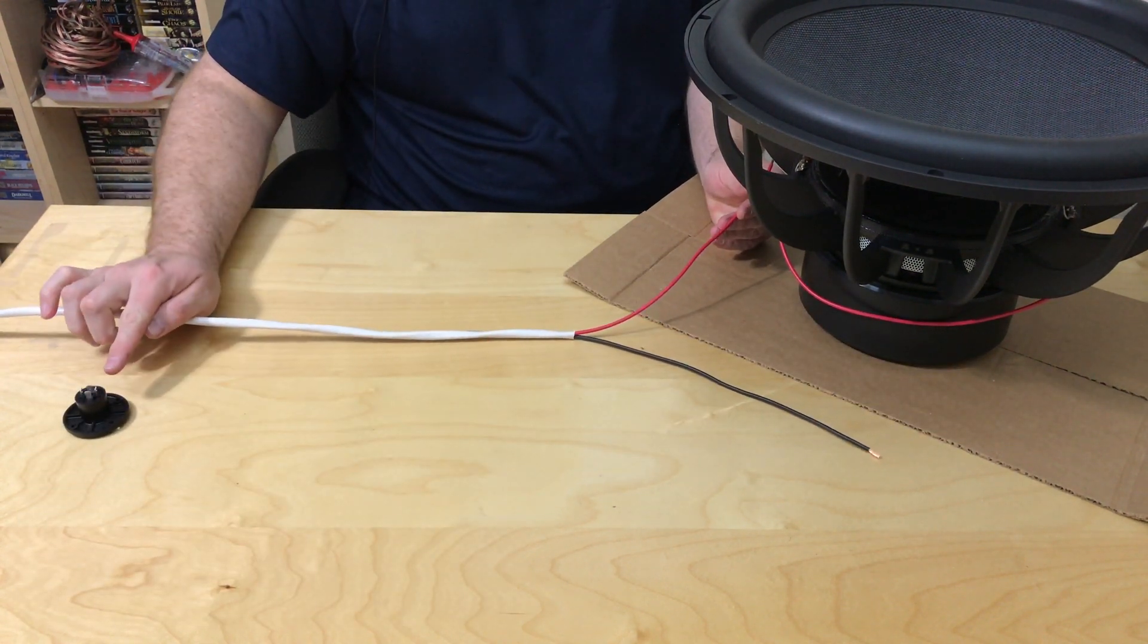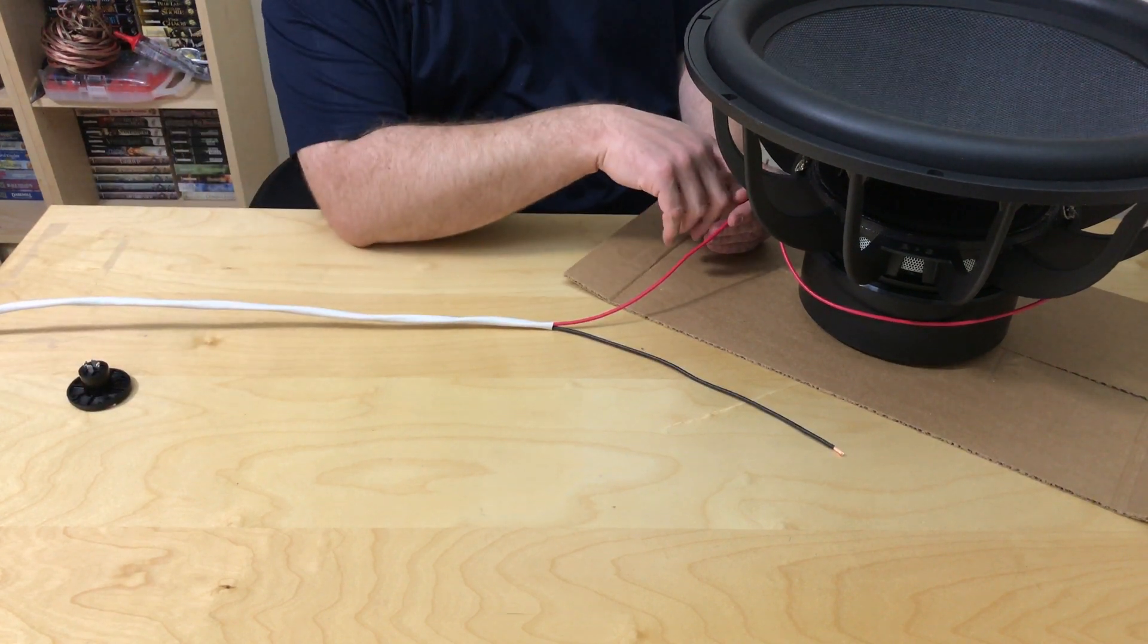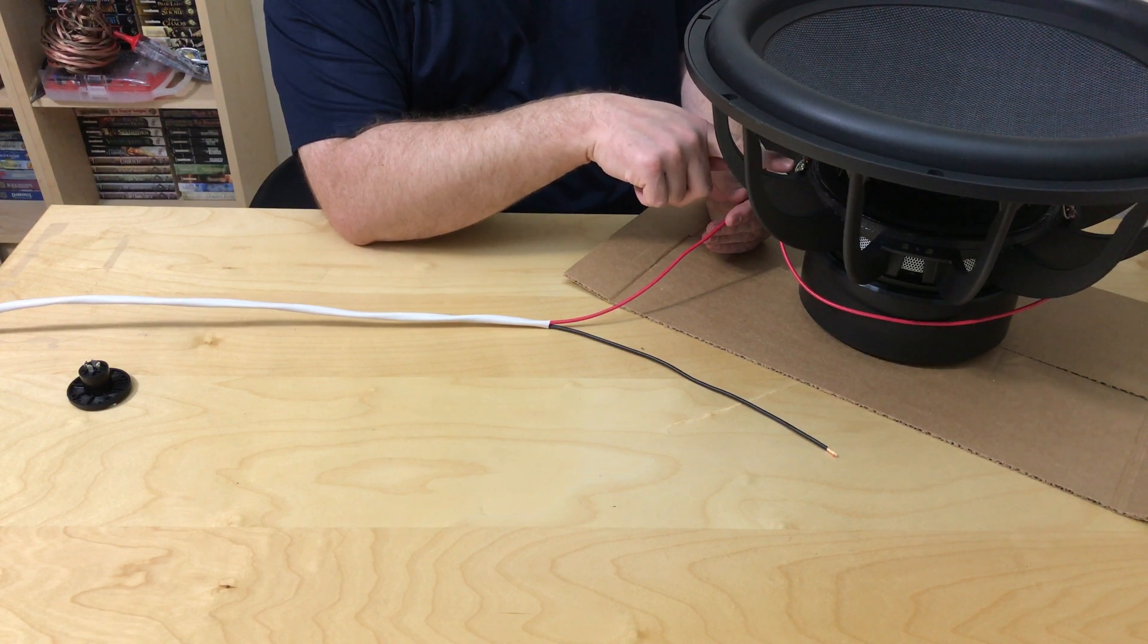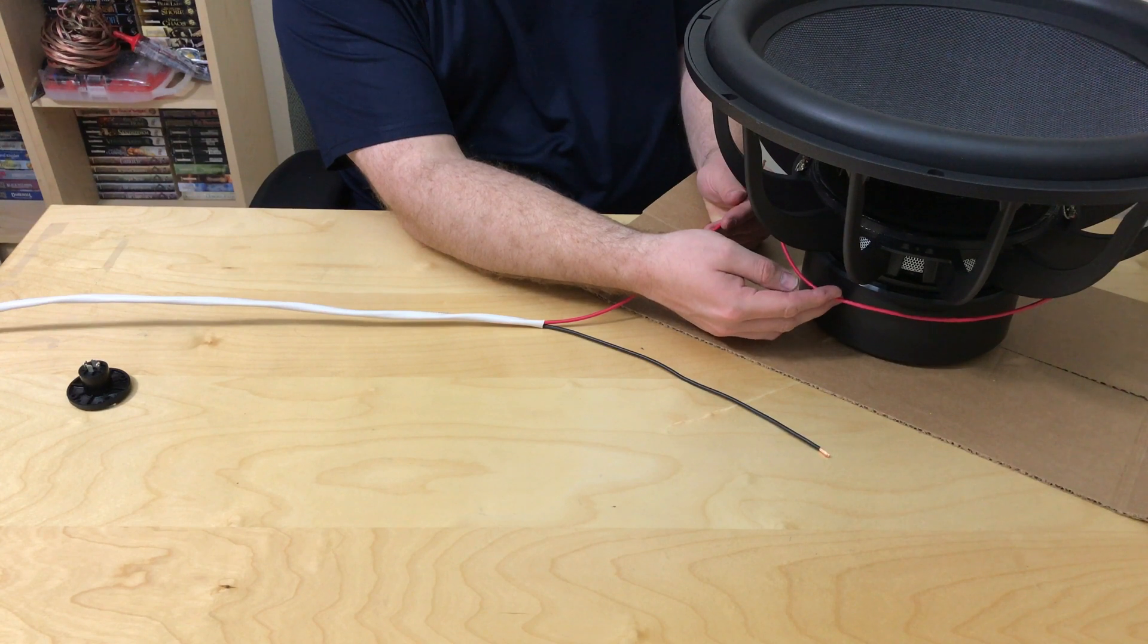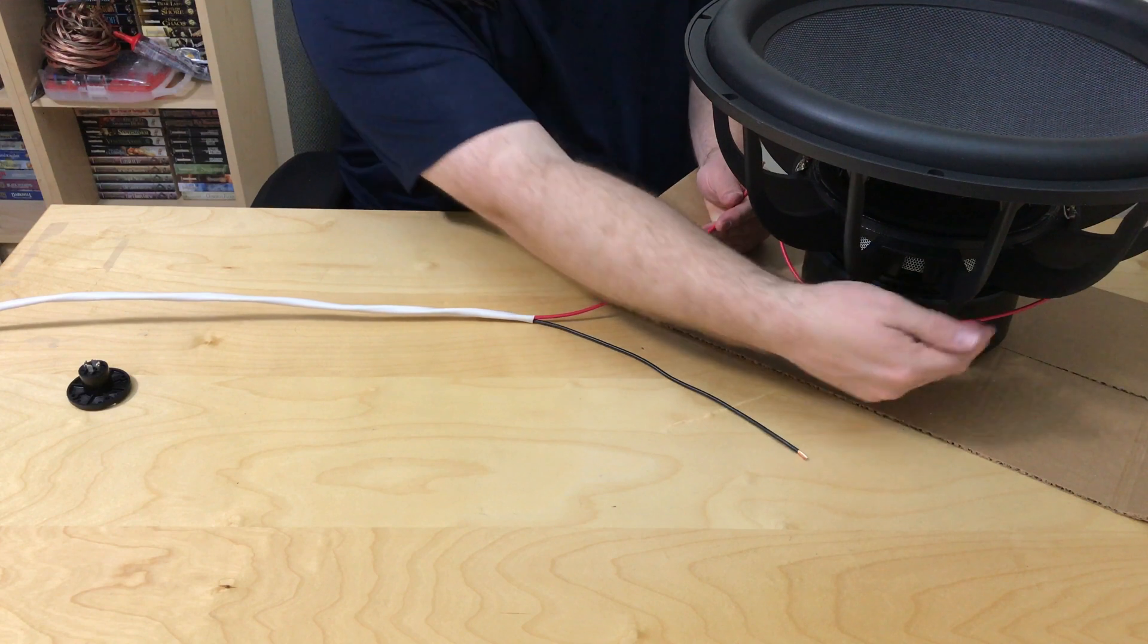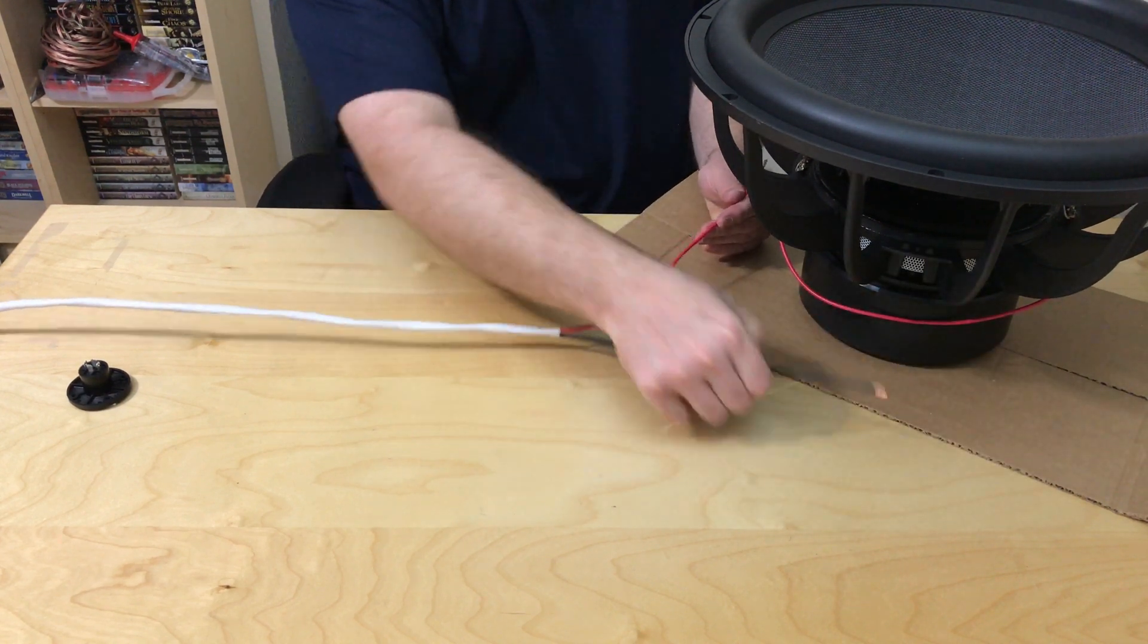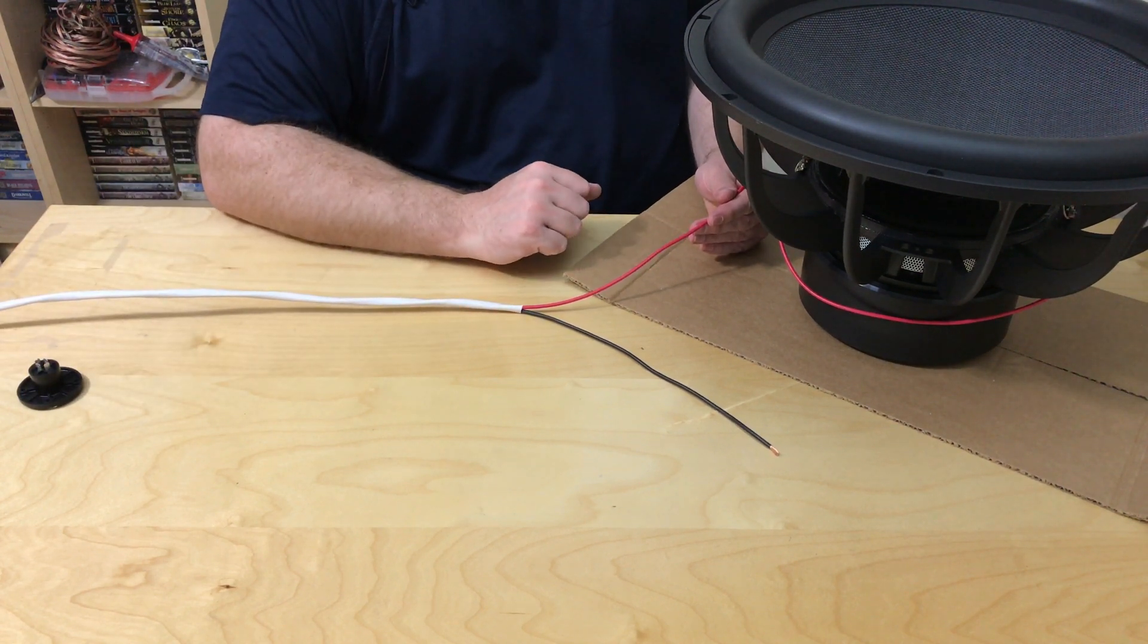it's going to be the positive coming in from your outside world to your subwoofer to voice coil 1 positive. Then you take the negative on voice coil 1. You'll take another piece of wire that you can cut out of your cabling. And it's a single strand that you would run from your negative to the positive of voice coil 2. And then the negative of voice coil 2 will return back to the negative input on the edge of your subwoofer box.